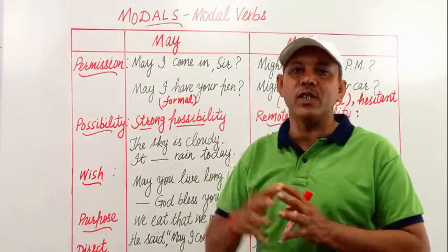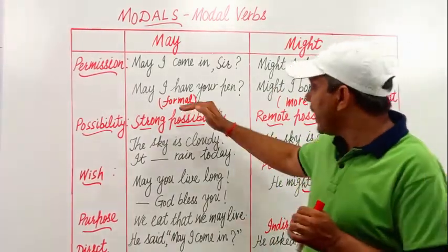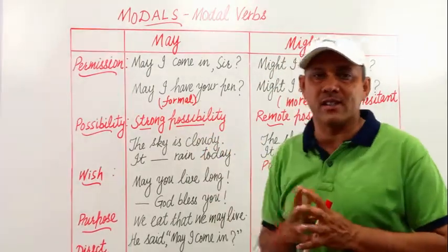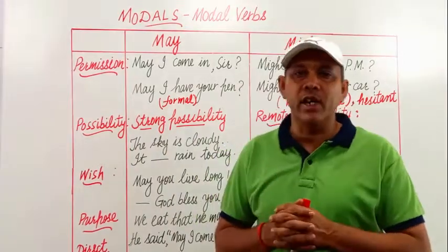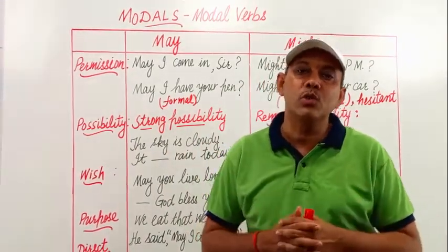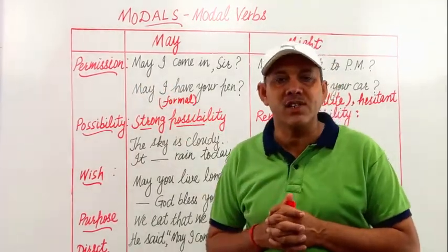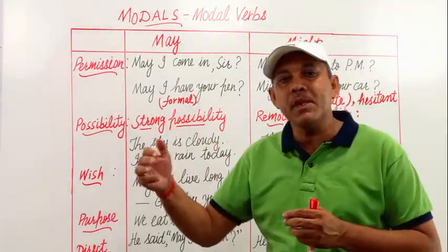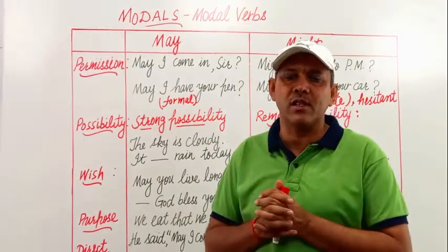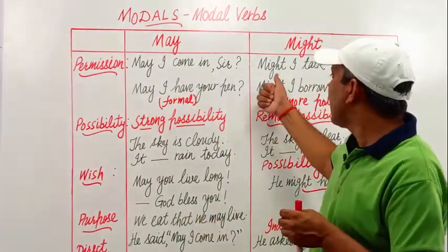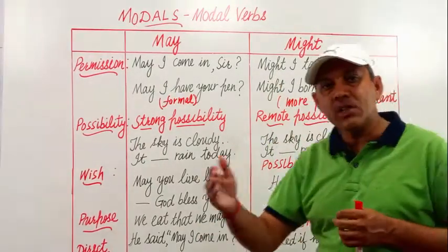But if the permission is being taken from a very high authority, we have to be very much more polite. For example, if a meeting of a deputy commissioner is going on with some officers and I have to talk to the deputy commissioner, then we have to be more polite and we can't use 'may' in that situation. If I want to have a meeting with the Prime Minister of India, I must be more polite and make a more polite request.